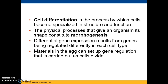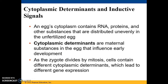But if all of our cells came from one cell — that zygote — how did different cells decide which portions of their genome to read? It turns out that materials in the egg can actually set up differential regulation that is carried out as the cells divide. What generates the first differences among cells in an early embryo, and what controls the differentiation of all the various cell types as development proceeds?